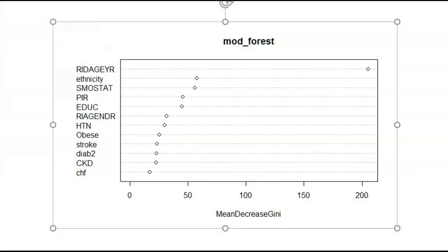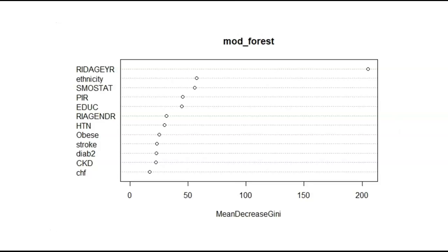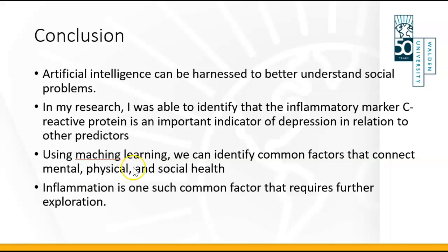The next thing that we were looking at is trying to make sense of all of this and how the original regression model, which was derived from a frequentist approach, can be combined with what we found here in order to find a more complete picture of what is going on. In conclusion, artificial intelligence can indeed be harnessed to solve complex issues.